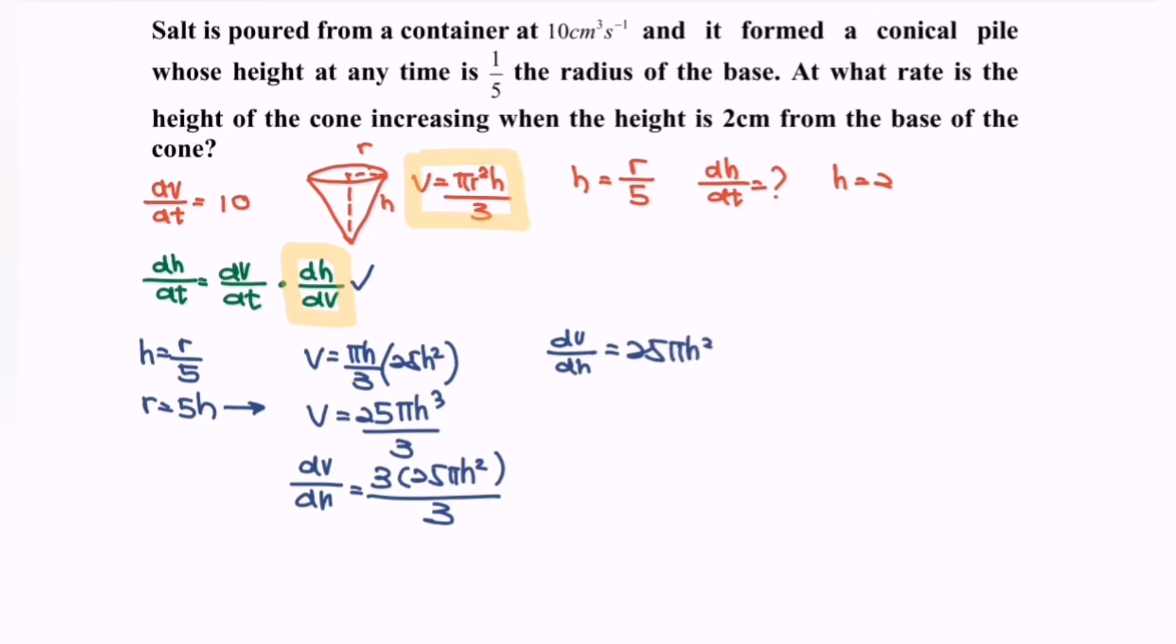Kindly substitute the situation into the chain rule. So we will have dh/dt is equals to 10 multiplied with dh/dV, meaning that we have to flip the situation, so 1 over 25πh².